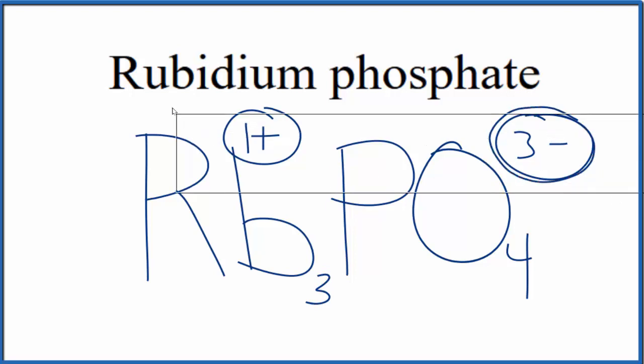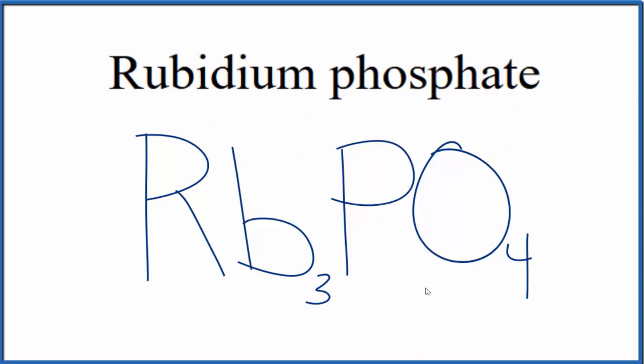So this is the formula for rubidium phosphate, Rb3PO4. This is Dr. B, and thanks for watching.